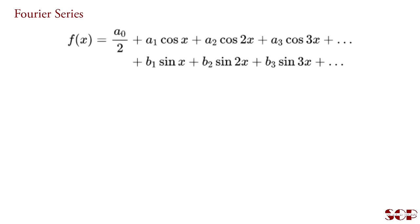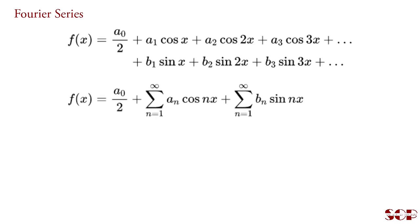Hence, the series is now written as: f(x) = a0/2 + a1 cos x + a2 cos 2x + a3 cos 3x + ... + b1 sin x + b2 sin 2x + b3 sin 3x + ... In compact form, it is written as: f(x) = a0/2 + summation n=1 to infinity of (an cos nx) + summation n=1 to infinity of (bn sin nx).